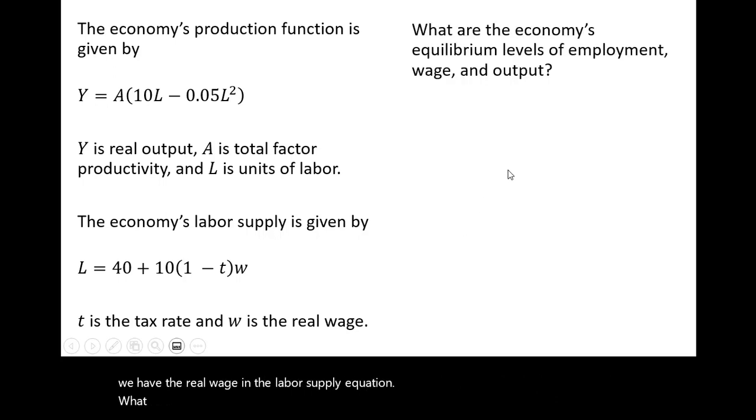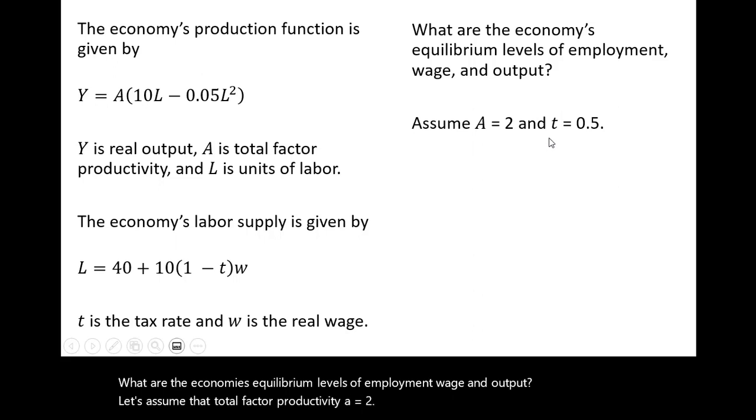What are the economy's equilibrium levels of employment, wage, and output? Let's assume that total factor productivity A equals 2, and the tax rate is 50%, or 0.5.